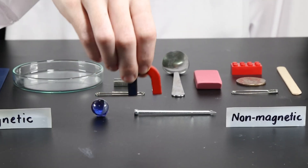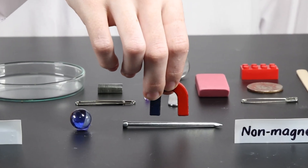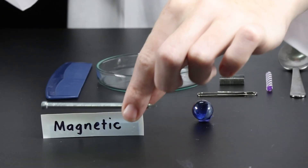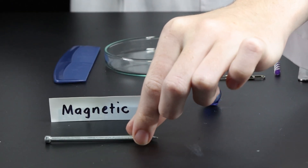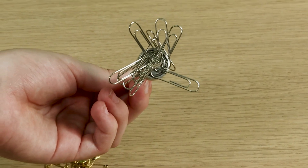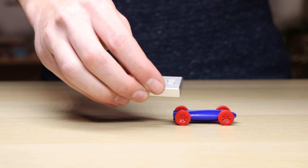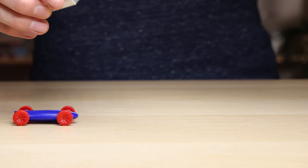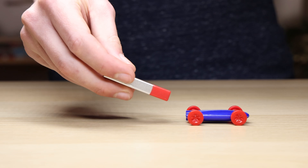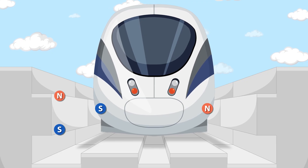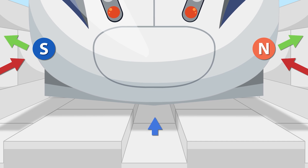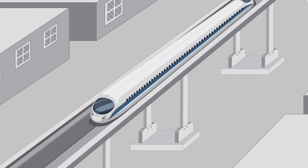Magnets exert forces that interact at a distance, without direct contact. They can attract magnetic materials like iron and steel, but they can also attract and repel other magnets — an interaction that led to the invention of maglev trains, where magnetic forces lift the train off the tracks and propel it forward at lightning speeds.